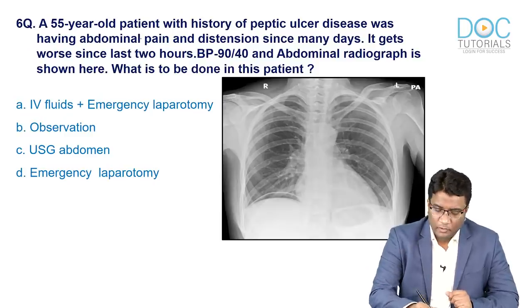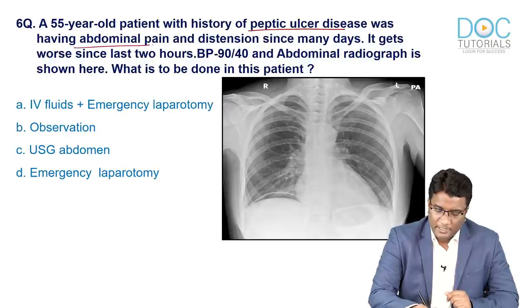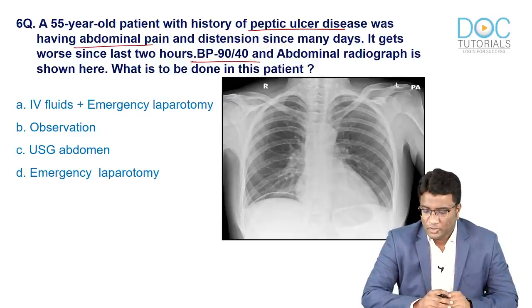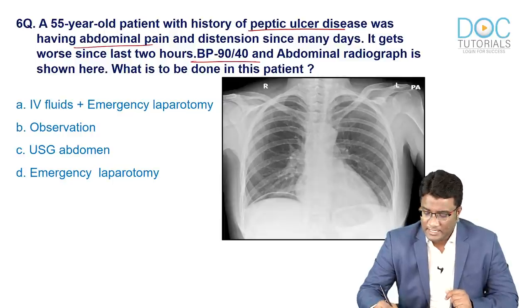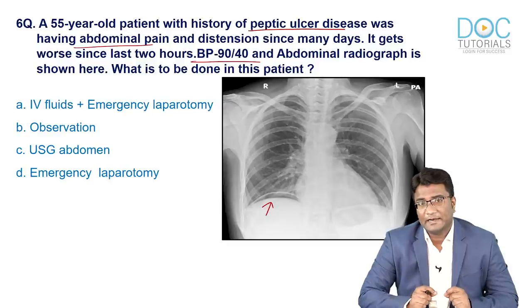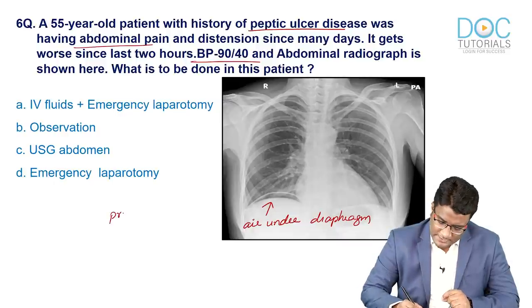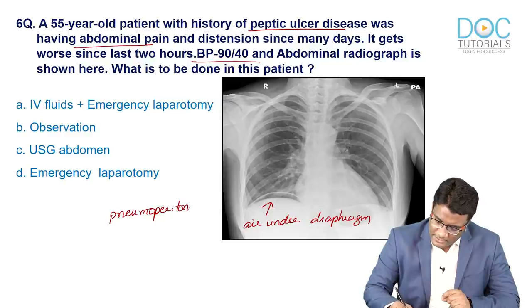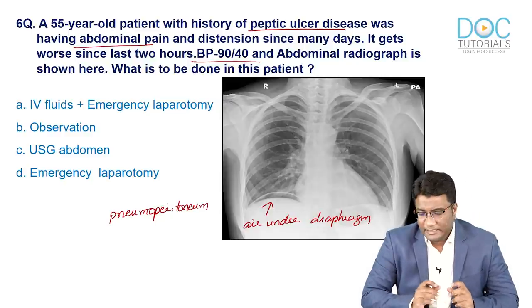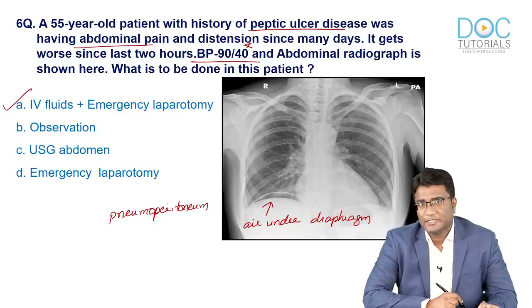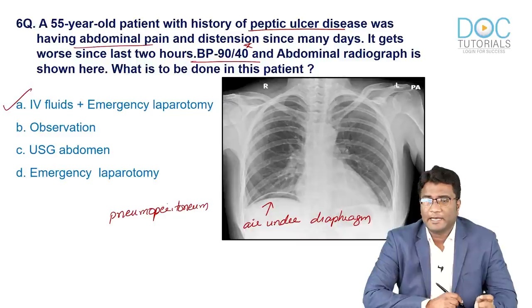Next question: a 55-year-old patient with history of peptic ulcer disease has abdominal pain and distension worsening over the last two hours, blood pressure 90/40, and the radiograph shows free air under the right dome of the diaphragm — this is pneumoperitoneum due to hollow viscus perforation. The patient is in shock with hypotension, so the treatment should be IV fluids and emergency laparotomy.